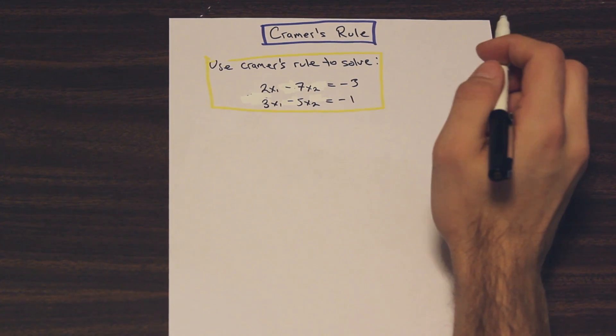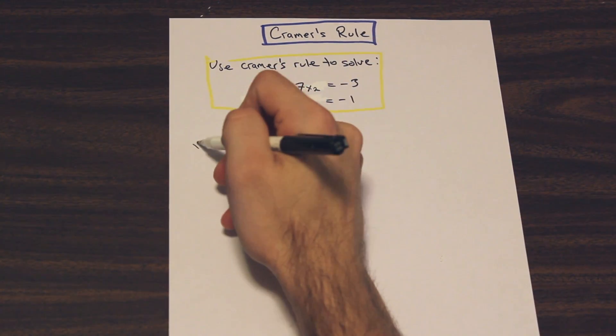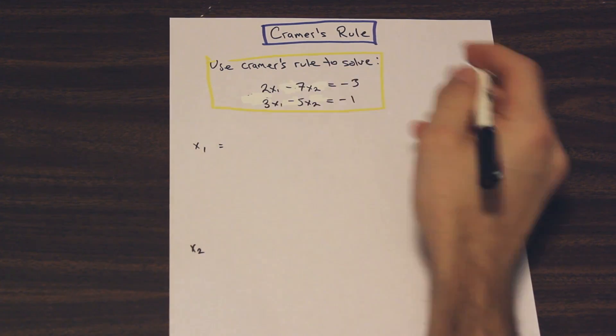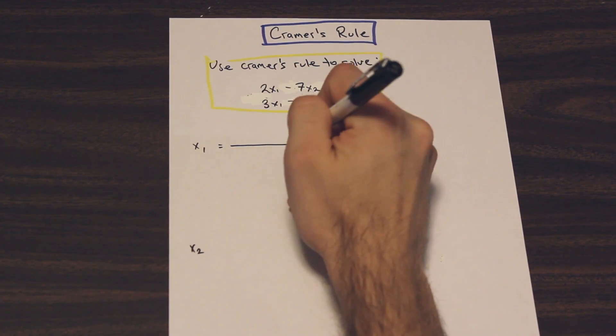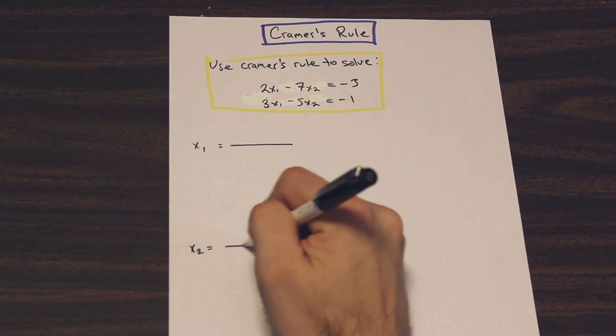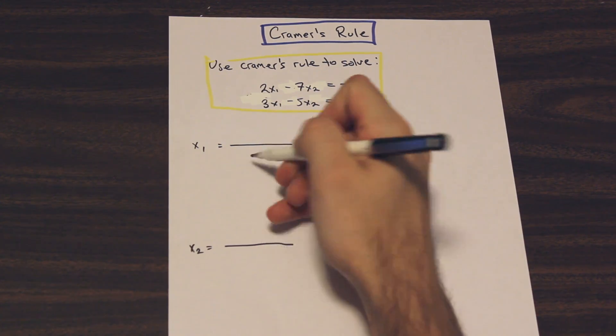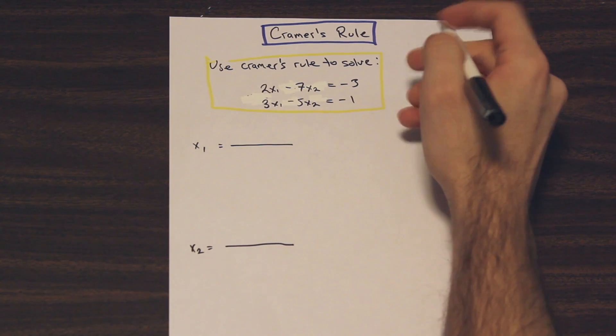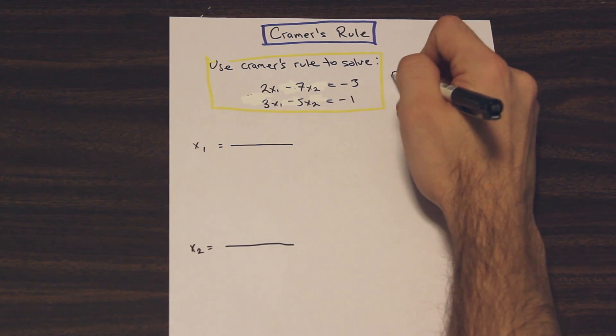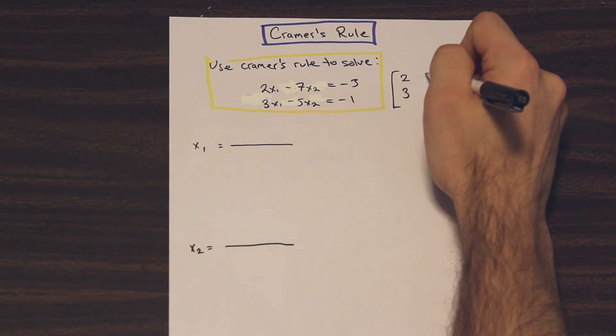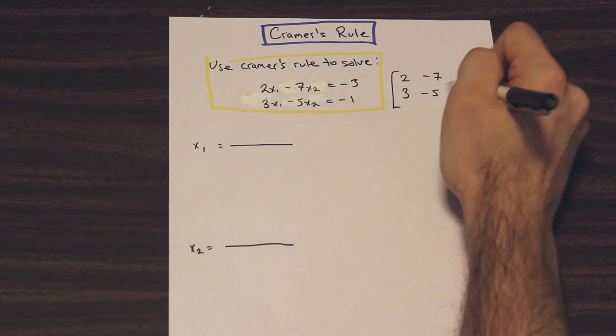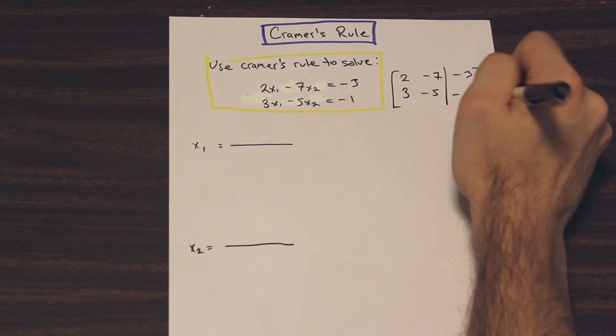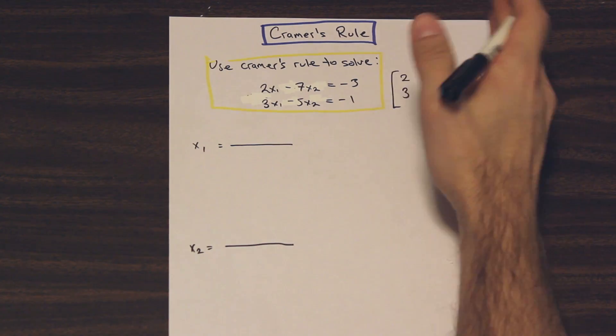So all we're going to do here is write out the expressions for x1 and x2. They're both going to be quotients. And on the bottom of both quotients, the solutions for x1 and x2 is going to be the matrix on the left side. So we can rewrite this matrix as 2, negative 7, 3, negative 5, and then negative 3, negative 1. That kind of just denotes that it's on the other side of the equation.